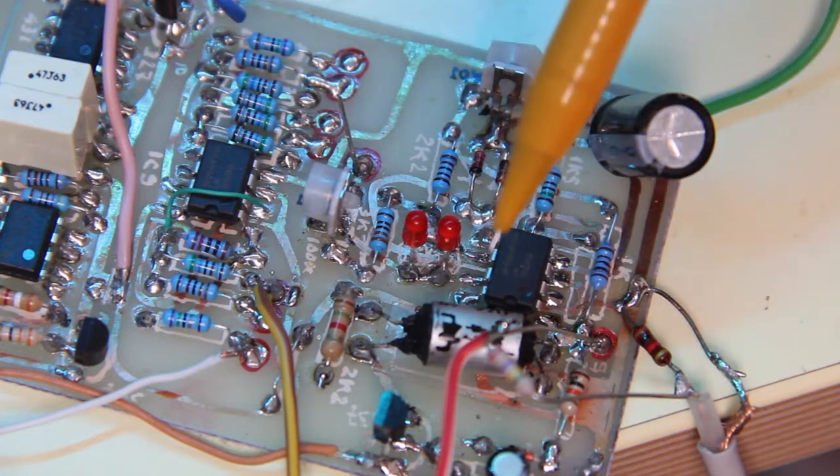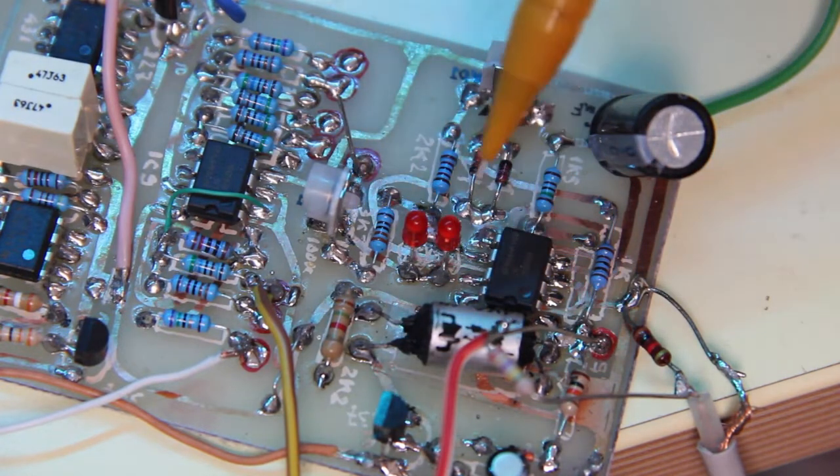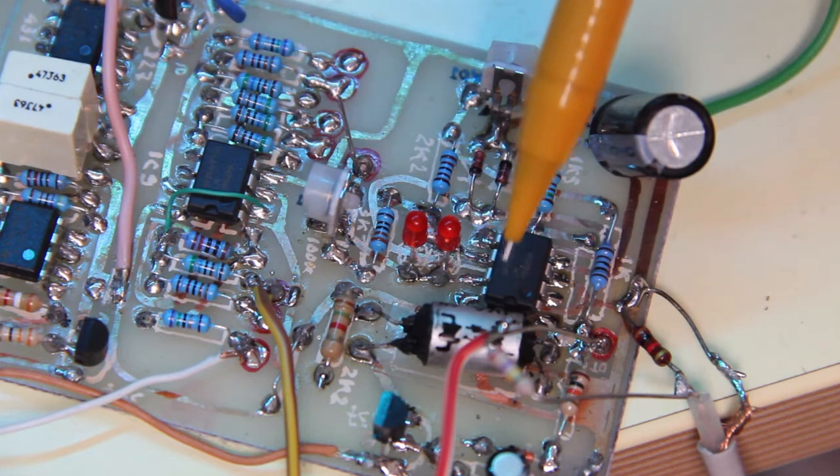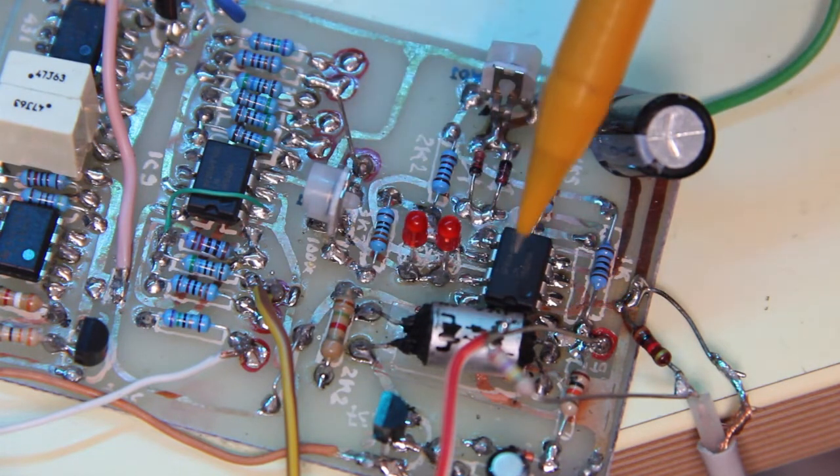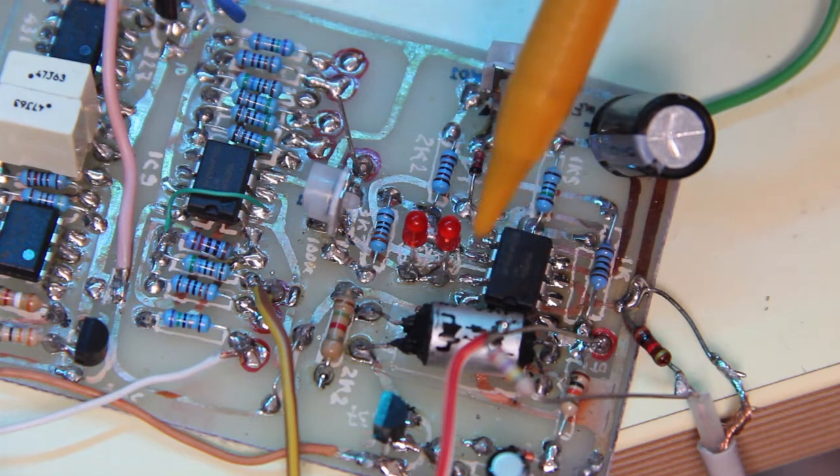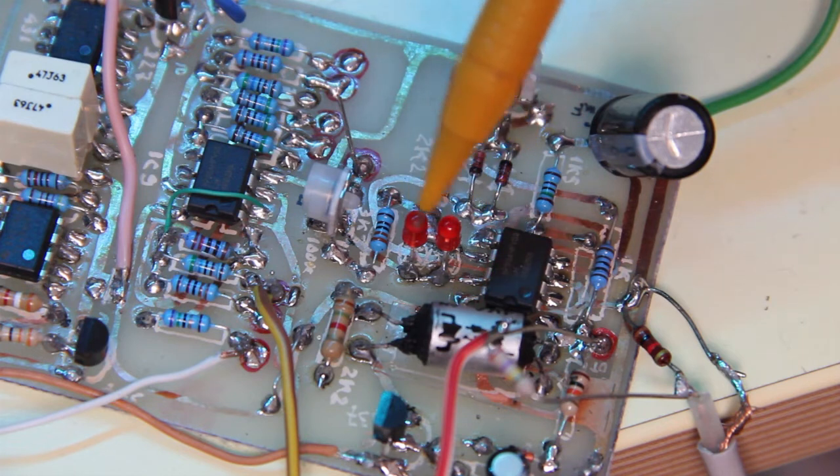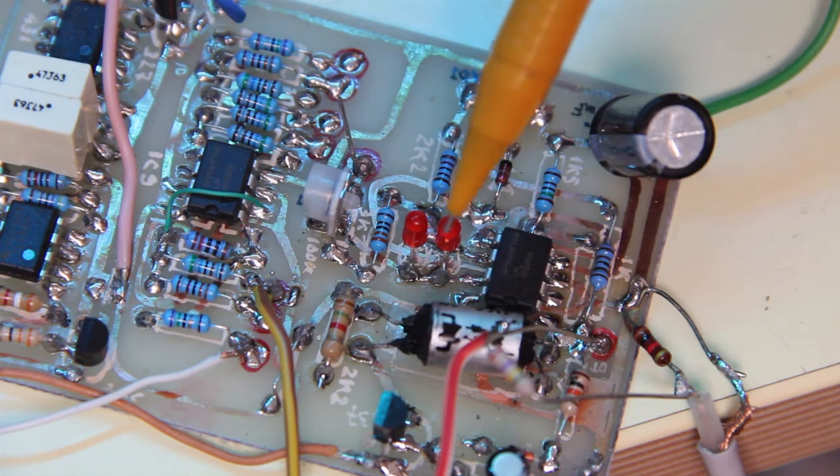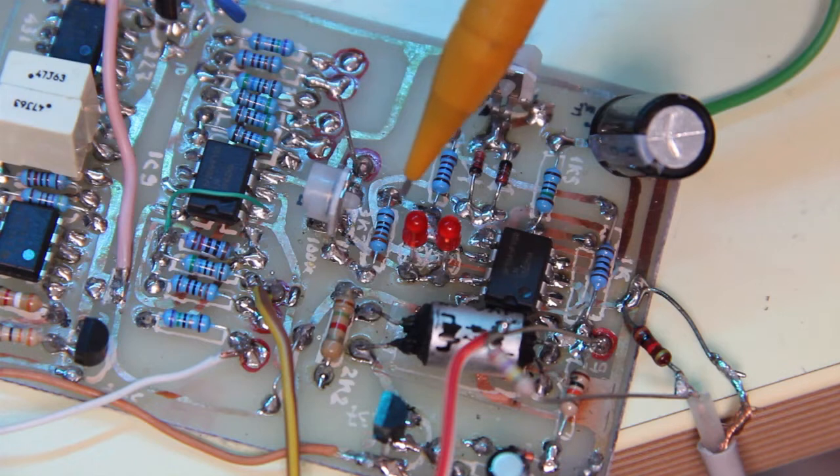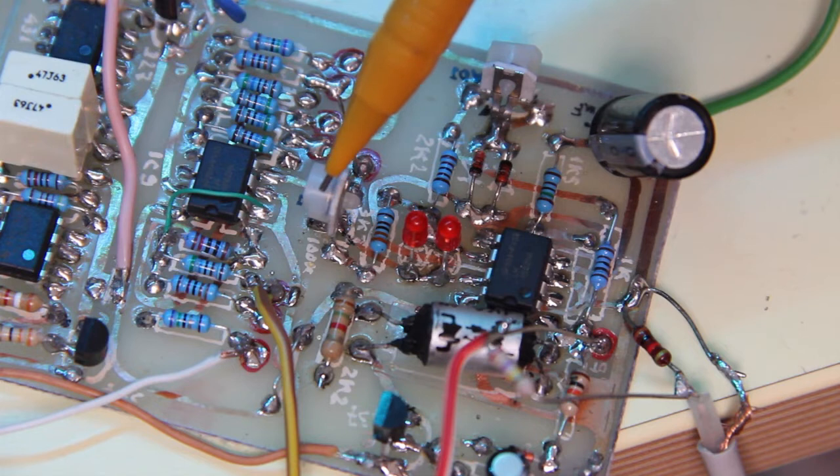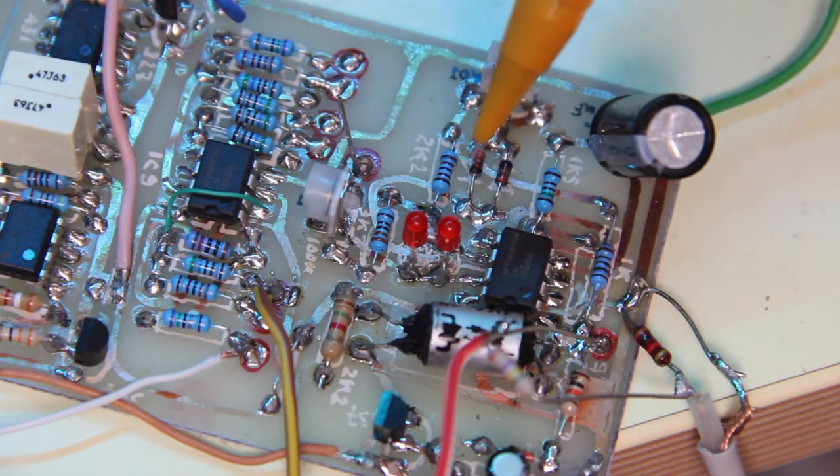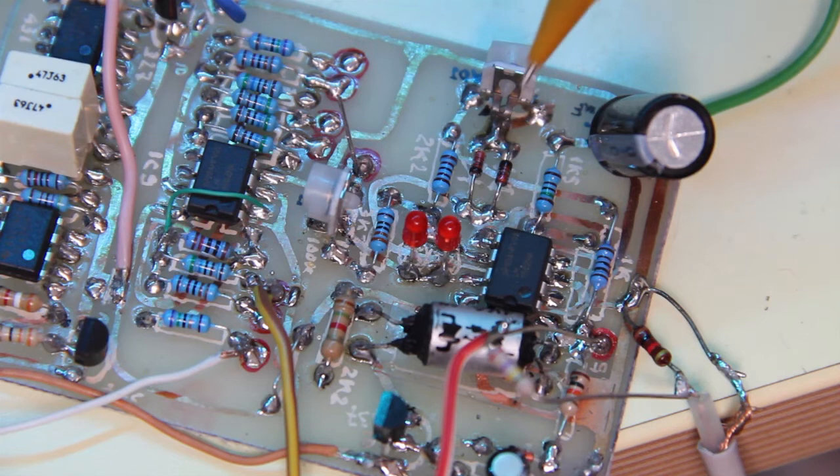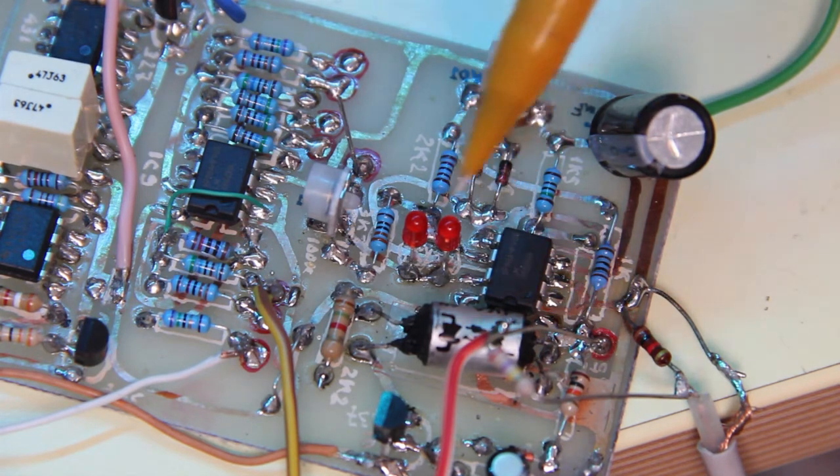And here we go. This is the region of the circuit that makes the shaper. This is the operation amplifier. The half operation amplifier is used as a shaper. These are the two LEDs, the feedback control resistors and potentiometer. The two diodes and the potentiometer to adjust the shape of the input of the operation amplifier.